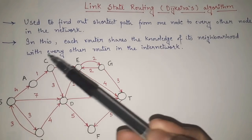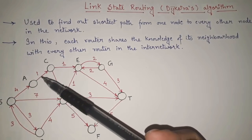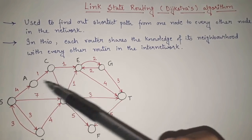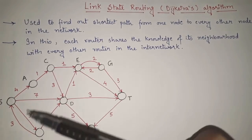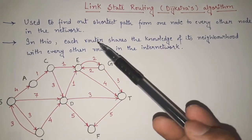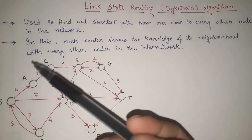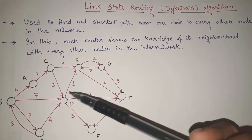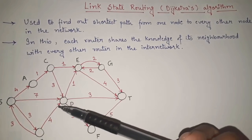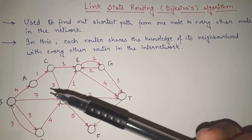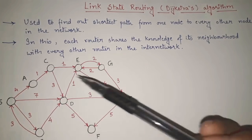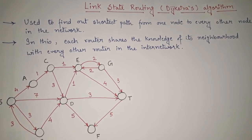For example, this is a network I have shown here. With the help of link state routing, we will be able to find out the shortest path from node A to every other node. We can find out the shortest path from every node to every other node present in the network. Each router shares the knowledge of its neighborhood with every other router in the network. All the nodes communicate internally, sharing knowledge about the distance to each other. Ultimately, every node will know its shortest distance to every other node.